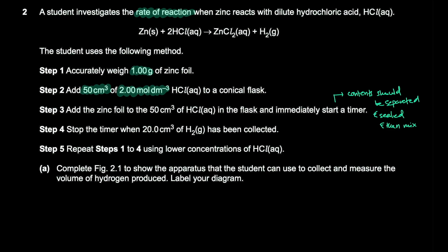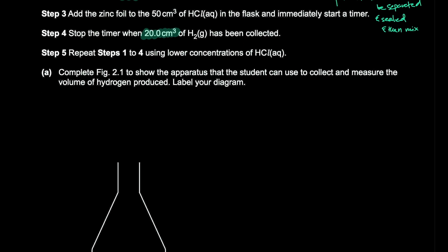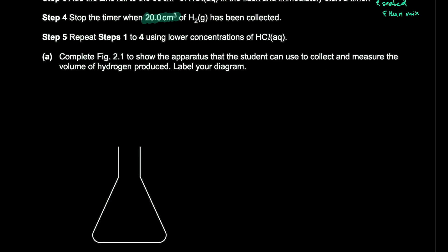Stop the timer when 20 cm³ of hydrogen gas has been collected. Repeat steps using lower concentrations of HCl. To collect and measure the volume of hydrogen produced, the apparatus includes a conical flask connected to a graduated gas syringe with a plunger.